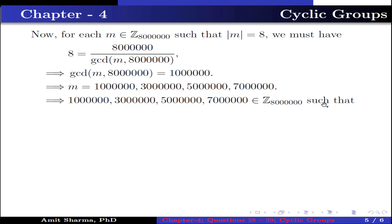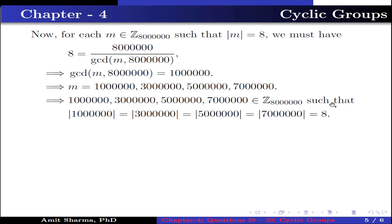These elements belong to Z_800000 such that the order of 100000, order of 300000, order of 500000, and order of 700000 is equal to 8.